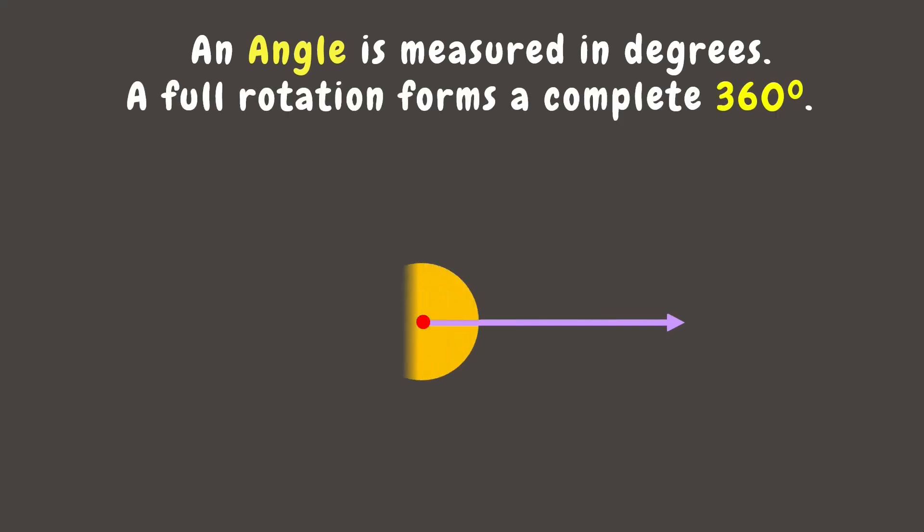Angles are measured in degrees, while a full rotation like turning in a complete circle forms 360 degrees. And we use a special tool to measure them.